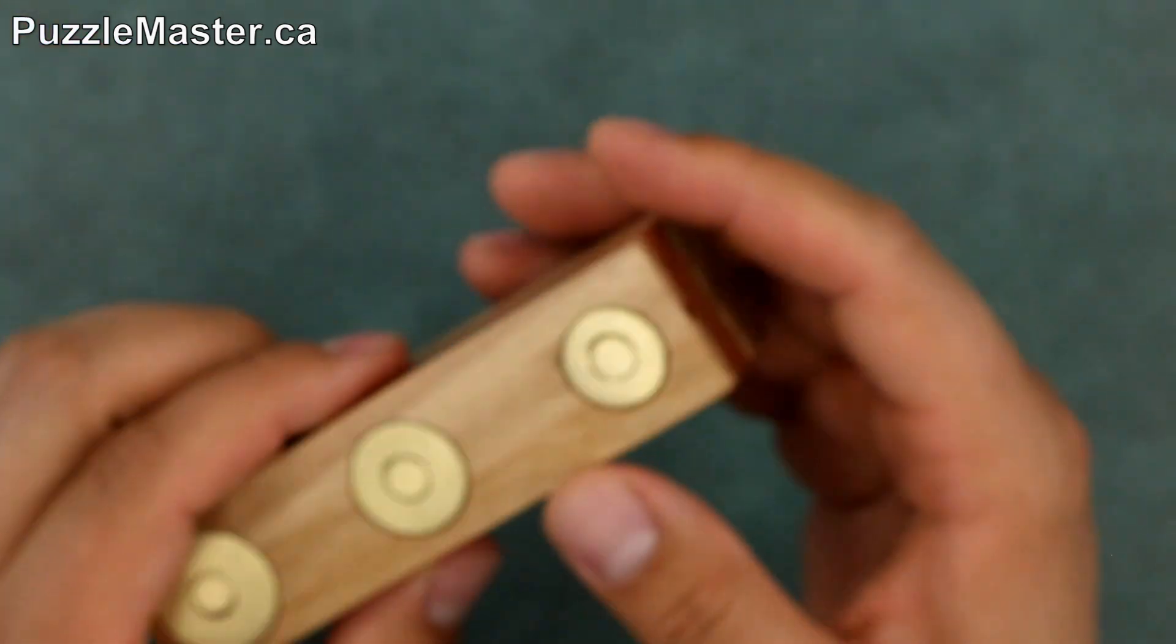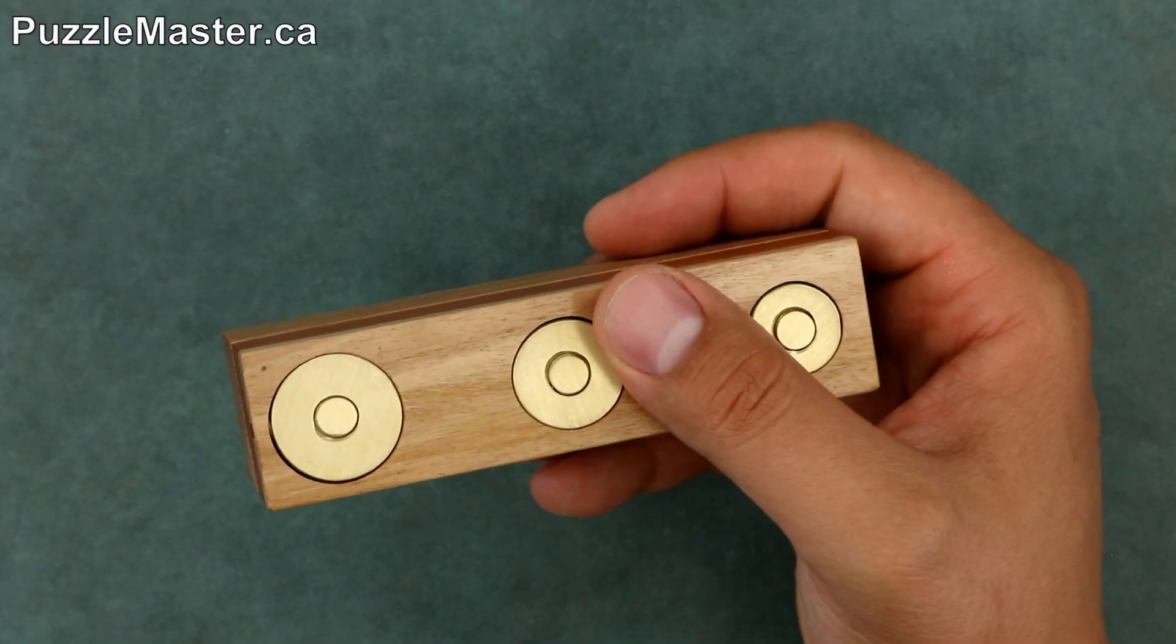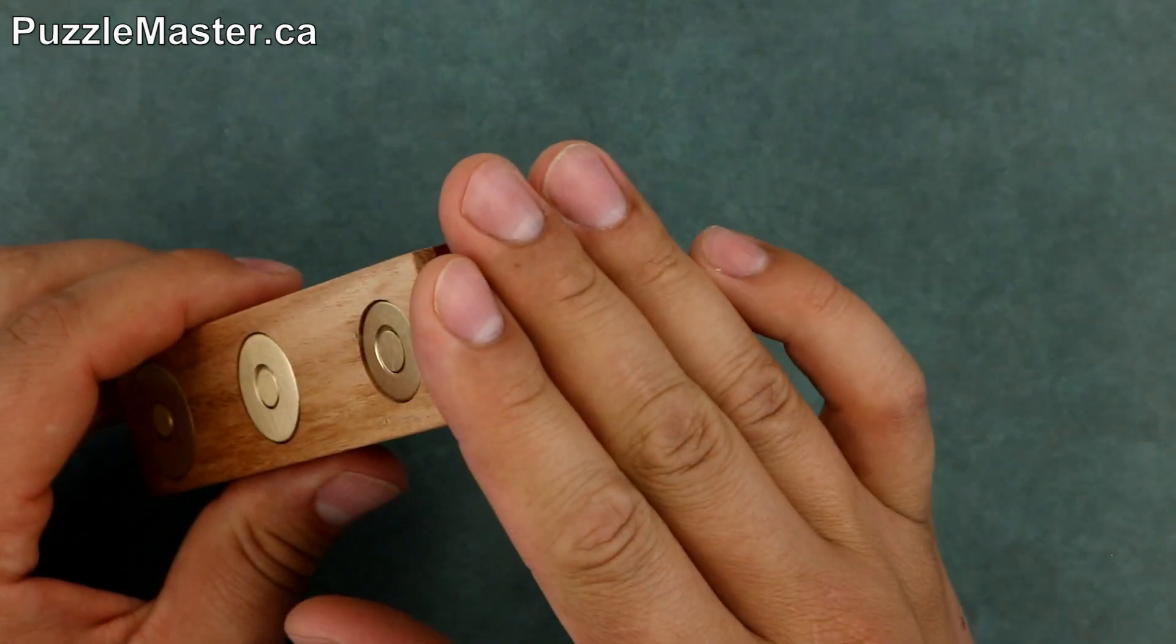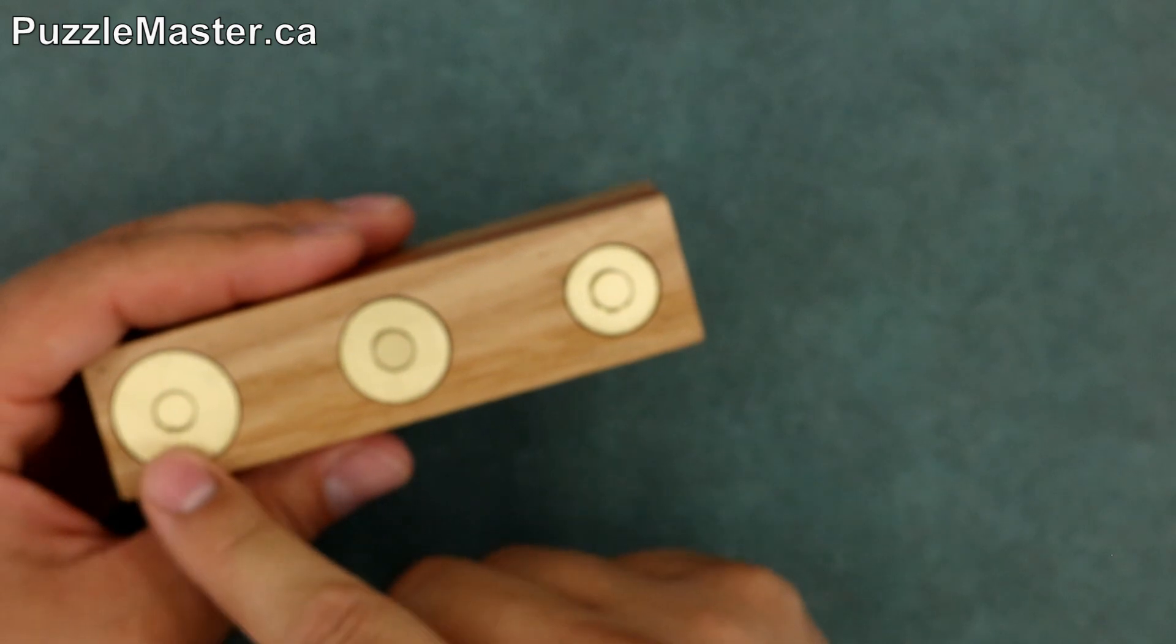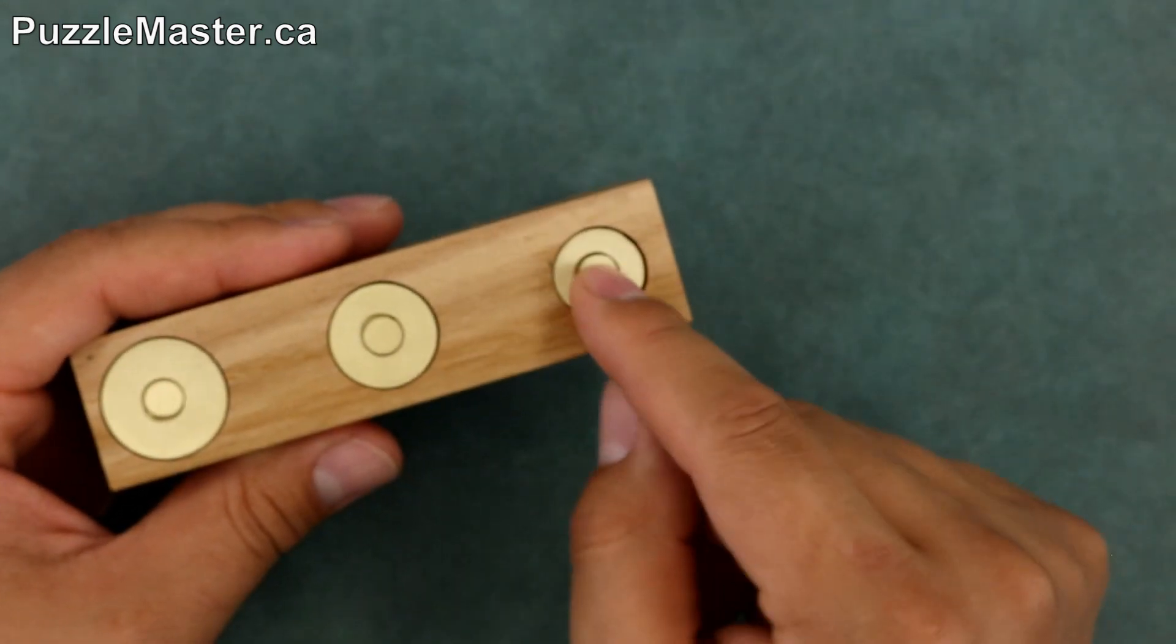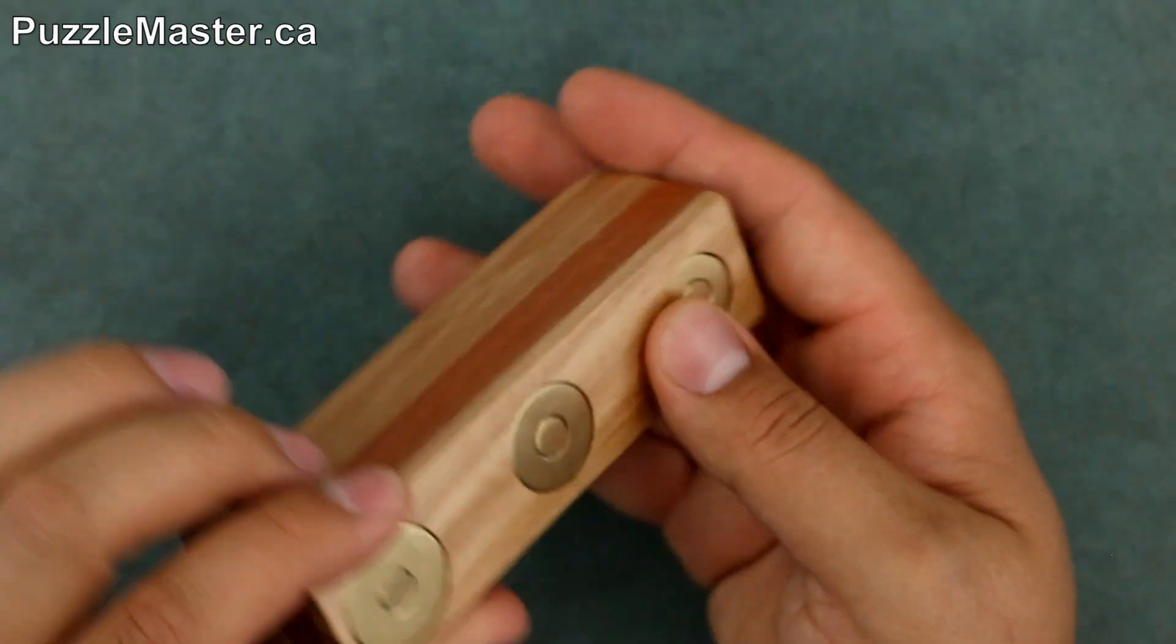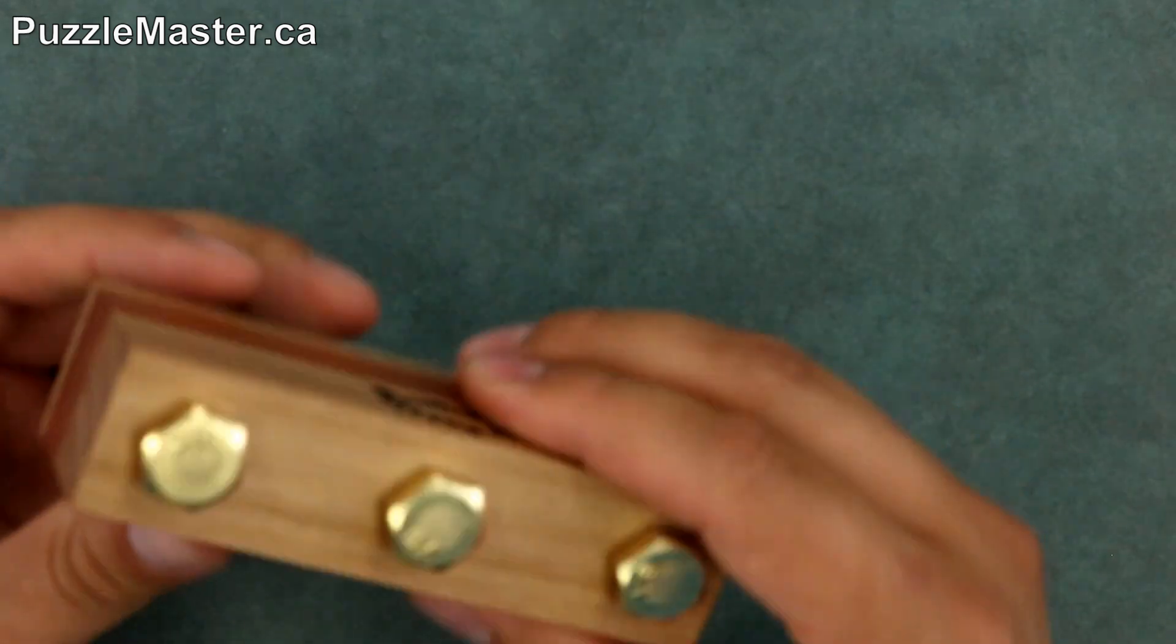Now the other side has that too. It does say in here that there's no external tools needed, but there are tools inside the puzzle that you'll use. Another interesting observation is on the bottom here, the three nuts are all different sizes. They go small, medium and large. Not sure what that's about, but a very cool thing. And it's quite heavy.